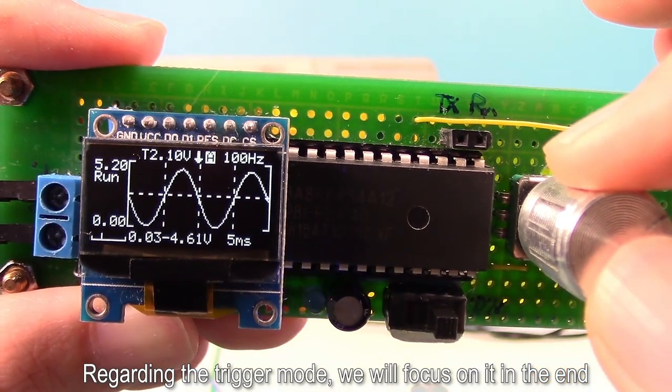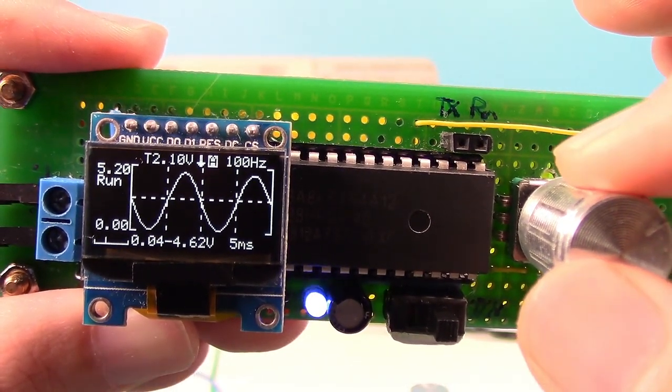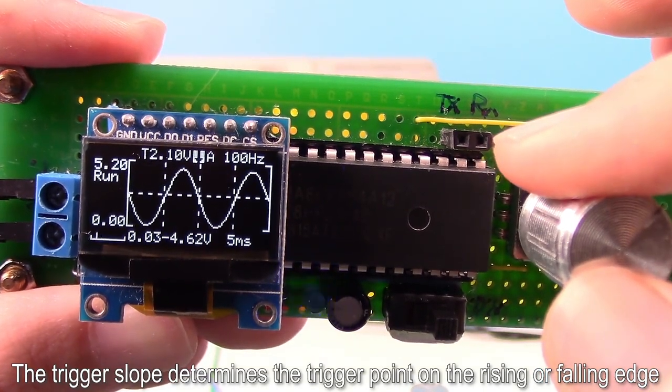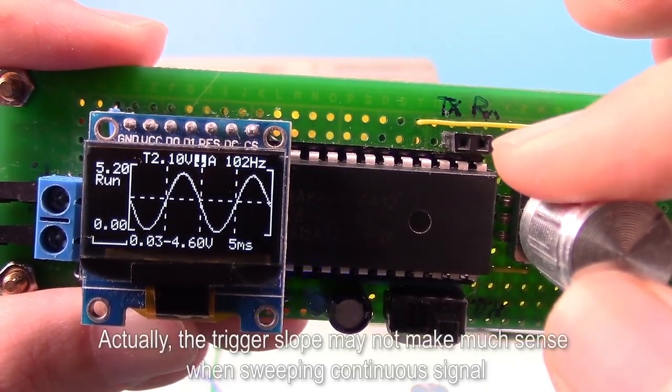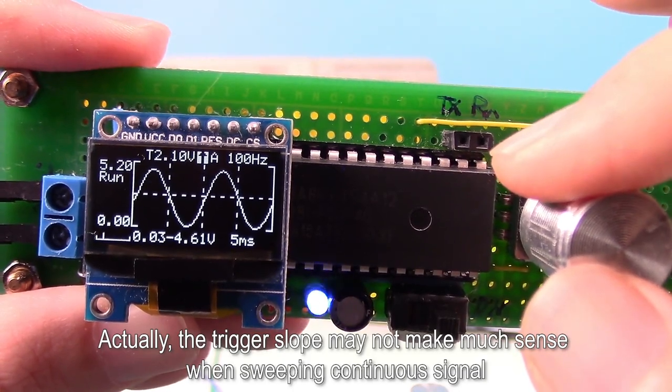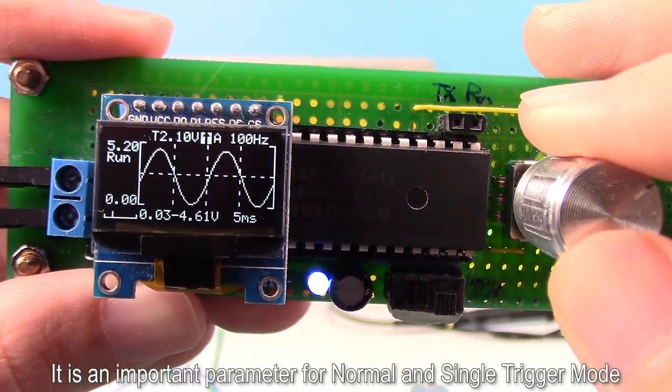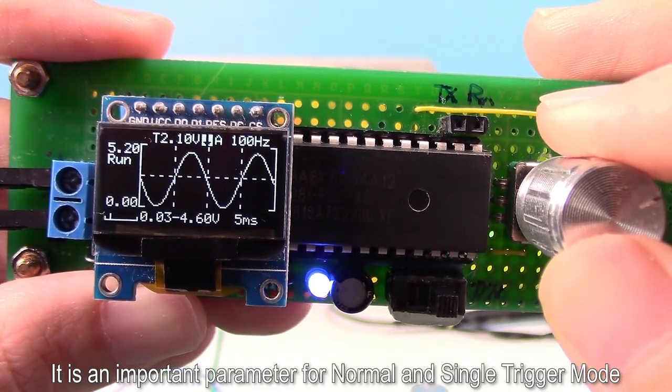Regarding the trigger mode, we will focus on it in the end. The trigger slope determines the trigger point on the rising or falling edge. Actually, the trigger slope may not make much sense when sweeping continuous signal. It's an important parameter for normal and single trigger mode.